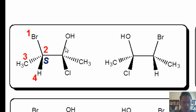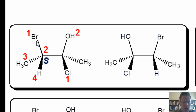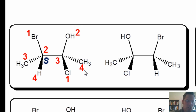Now I'll assign R or S to the stereocenter at the right. It's bonded to a chlorine, oxygen, carbon, and carbon. Chlorine wins, followed by oxygen. This carbon is bonded to a hydrogen, while the carbon at left is stuck to a bromine, so the carbon at left wins between those two. The CH3 is the loser. Going from one to two to three looks counter-clockwise, and indeed it is, because the lowest priority group, the CH3, is pointing three-dimensionally away from us. Thus the stereocenter here is S.